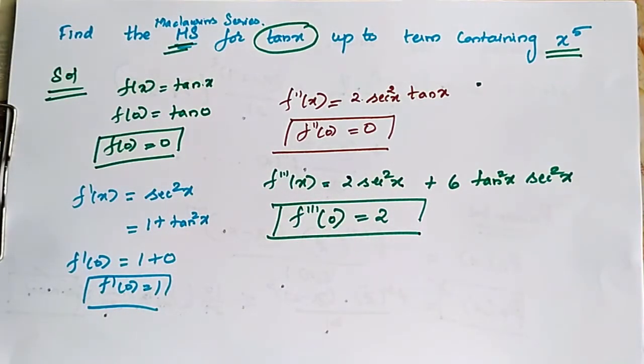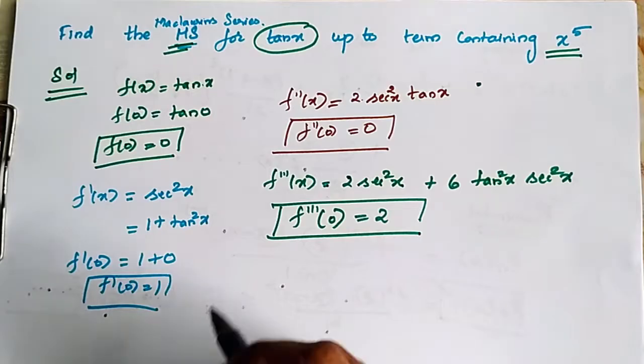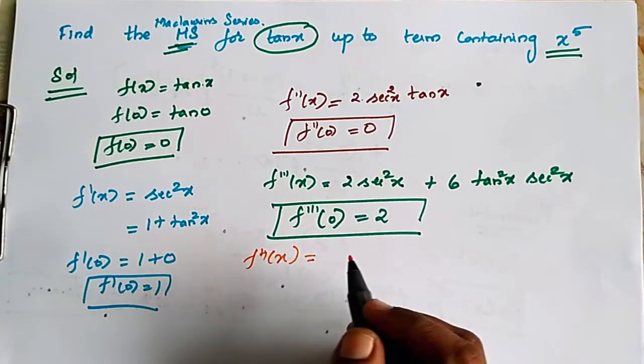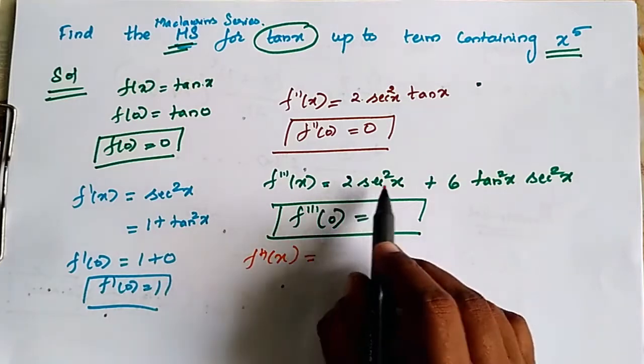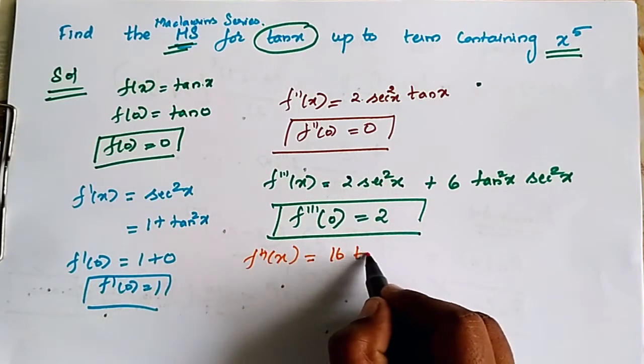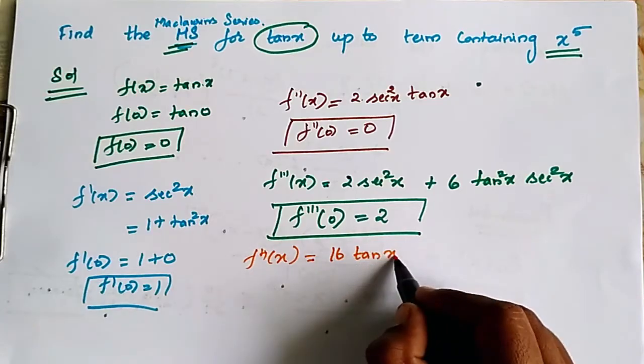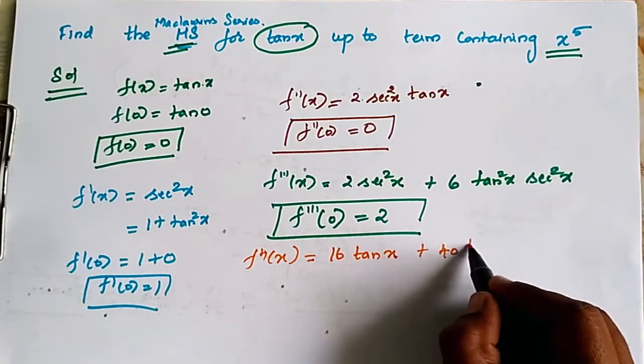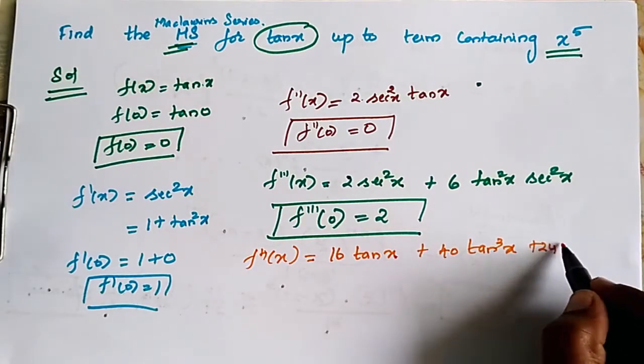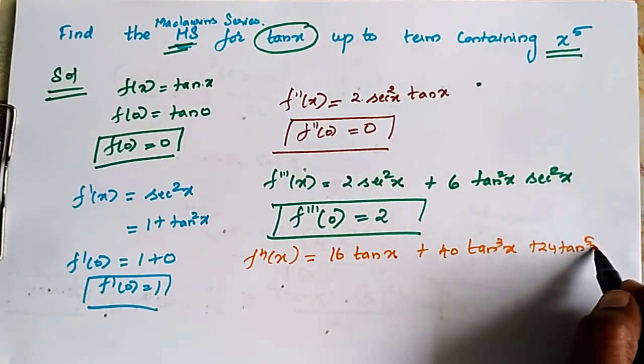Next, f 4 of x. f 4 of x is equal to, we differentiate this, we get 16 tan x plus 40 tan cube x plus 20 tan square x, 24 tan power 5x.